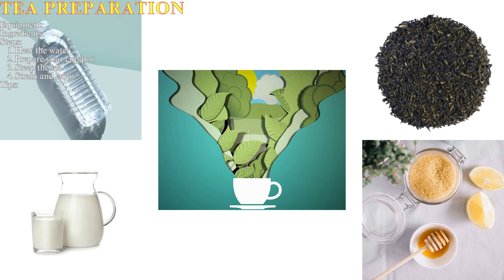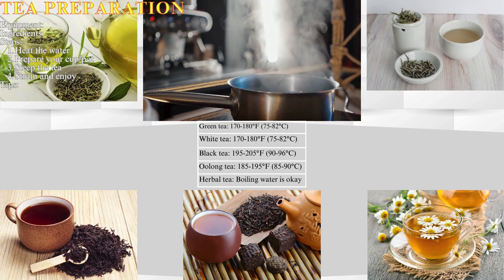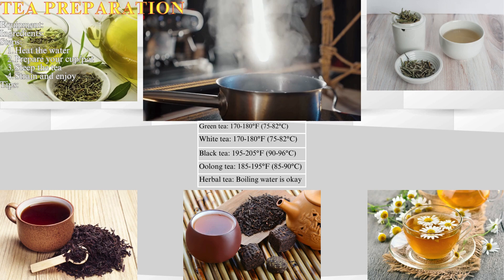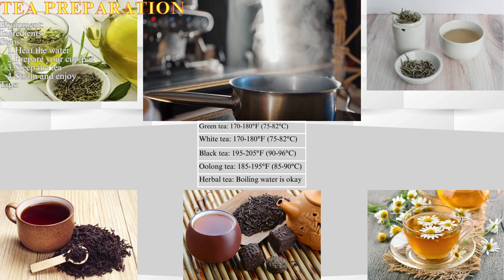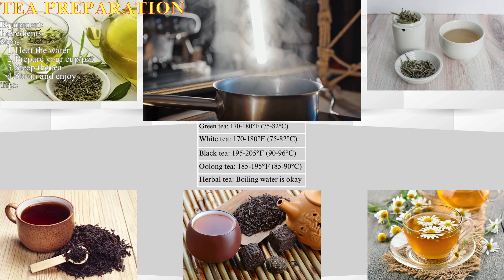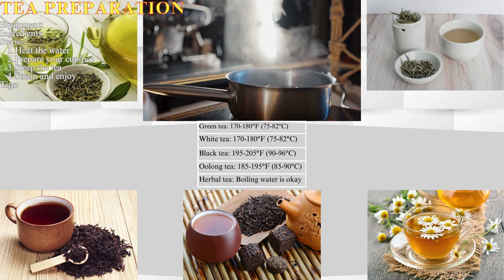Step one: heat the water. Fill your kettle with fresh water and heat it to the desired temperature, which varies depending on the type of tea. Green tea: 170–180°F (75–82°C). White tea requires a similar light temperature. Black tea: 195–205°F (90–96°C).